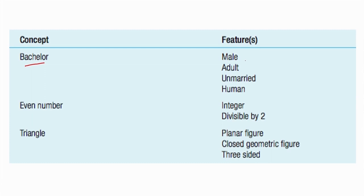For example, the concept of a bachelor: the features are it should be male, adult, unmarried, and human. But there is a problem — a 10-year-old boy is male, unmarried, and human, but he cannot be a bachelor. These are the deviations. Individually necessary and collectively sufficient — that is the problem with the classical view.